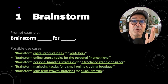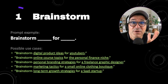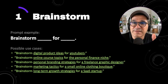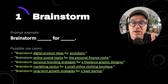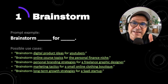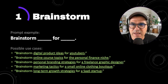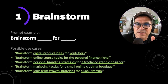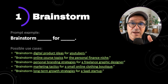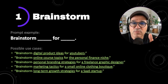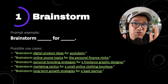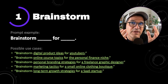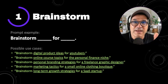Our first ChatGPT power prompt is brainstorm. ChatGPT loves this word. Have you ever been stuck on a blank screen looking for some ideas? Use the word brainstorm to start off your prompts. In this example I have brainstorm blank for blank — brainstorm idea for person. Some possible use cases could be brainstorm digital product ideas for YouTubers, or brainstorm online course topics for the personal finance niche, or brainstorm long-term growth strategies for a SaaS startup.